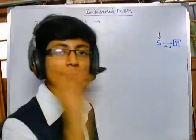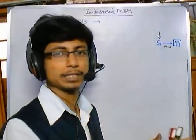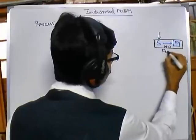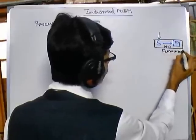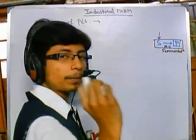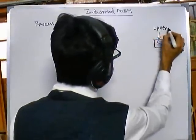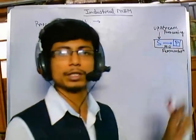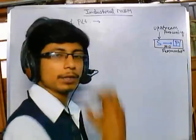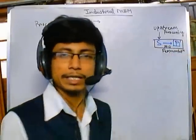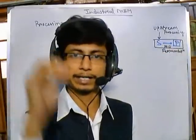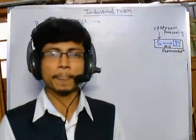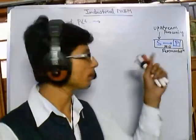To produce and provide the substrate perfectly for fermentation, we require upstream processing. After the fermentation — where substrates and microorganisms are added and microorganisms ferment the substrate into products — we get the products. But what we get in the fermenter is not only the product; microorganisms are also present there.